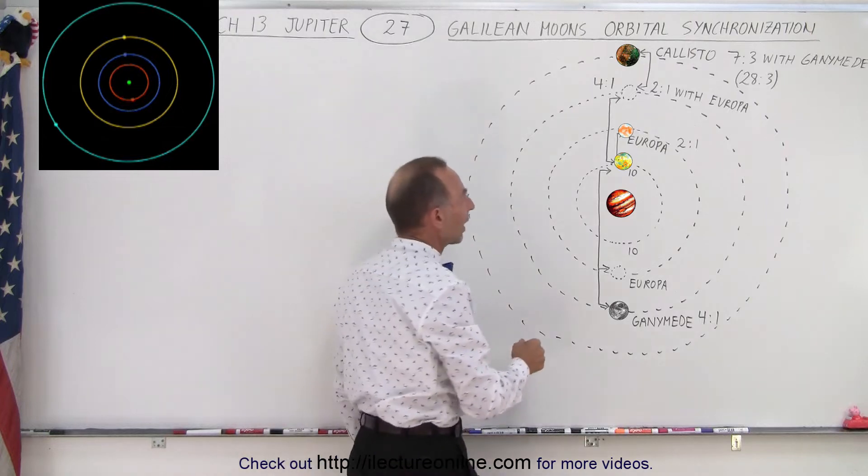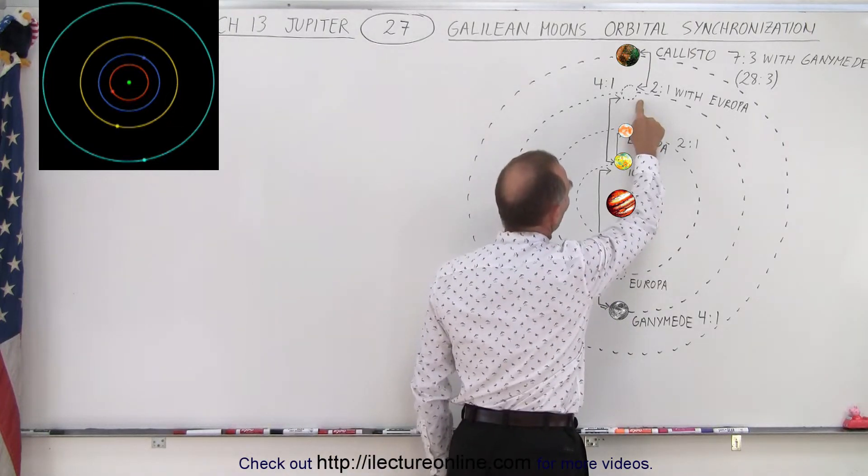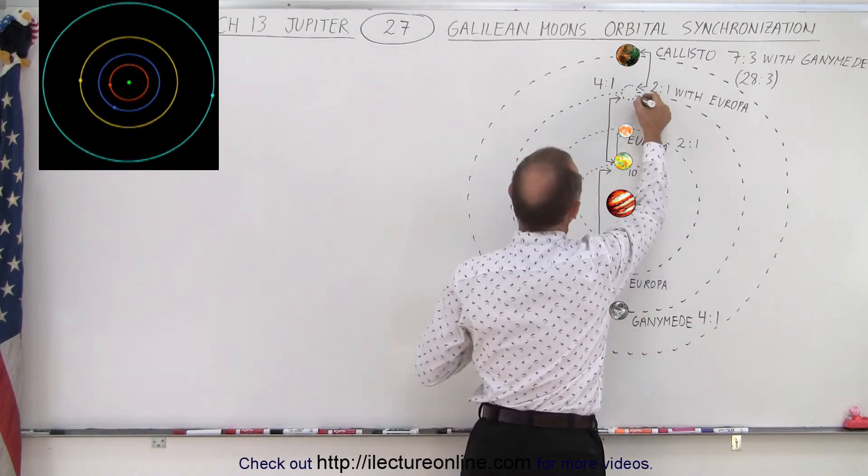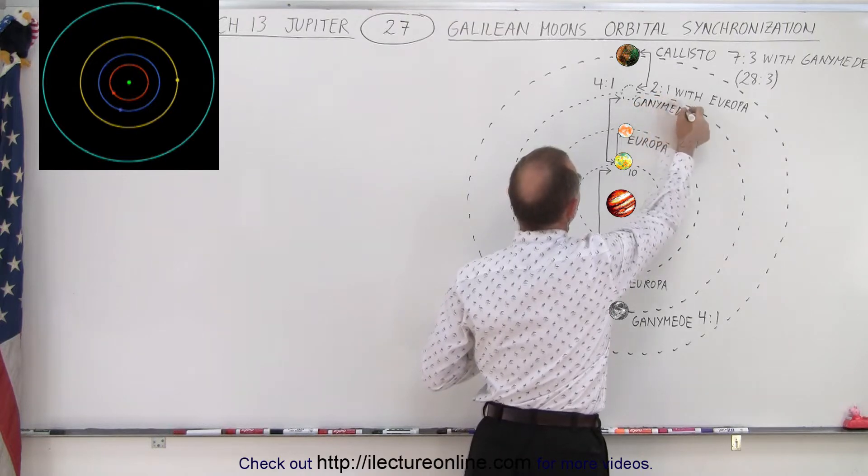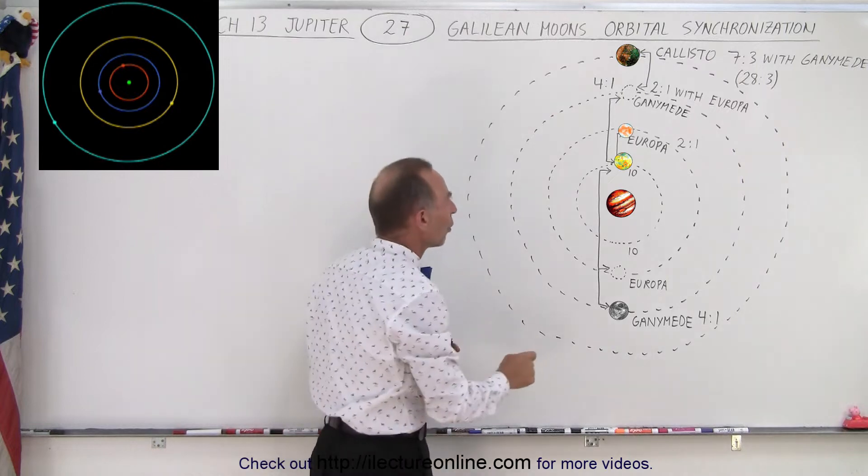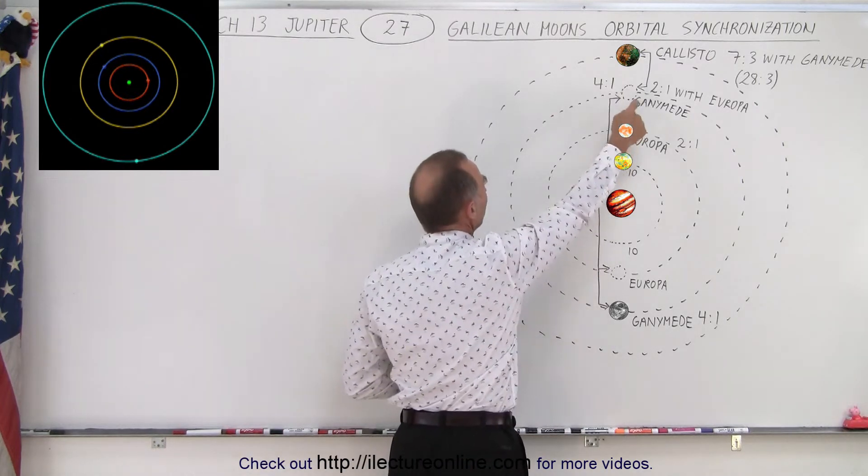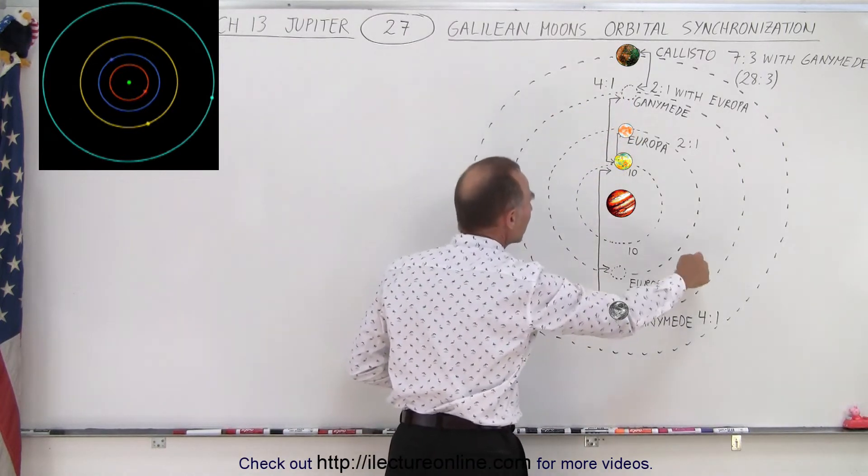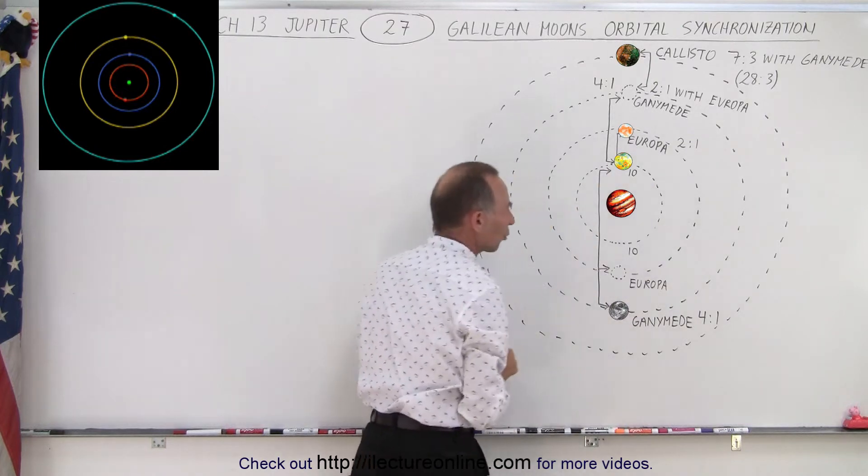Then it turns out that Ganymede's orbit, so this is Ganymede, let me put the word Ganymede there. Ganymede has a four-to-one synchronization with Io. So for every one trip around Jupiter for Ganymede, Io takes four trips.